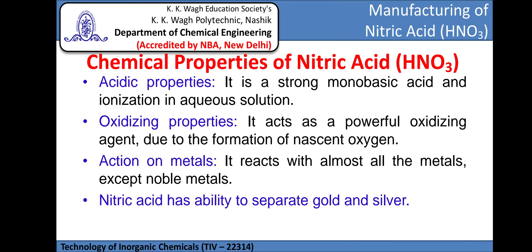The chemical properties of nitric acid include its acidic properties — it is a strong monobasic acid that ionizes in aqueous solution. Its oxidizing properties — it acts as a powerful oxidizing agent due to the formation of nascent oxygen. Its action on metals — it reacts with almost all metals except some noble metals. Nitric acid also has the ability to separate gold and silver.